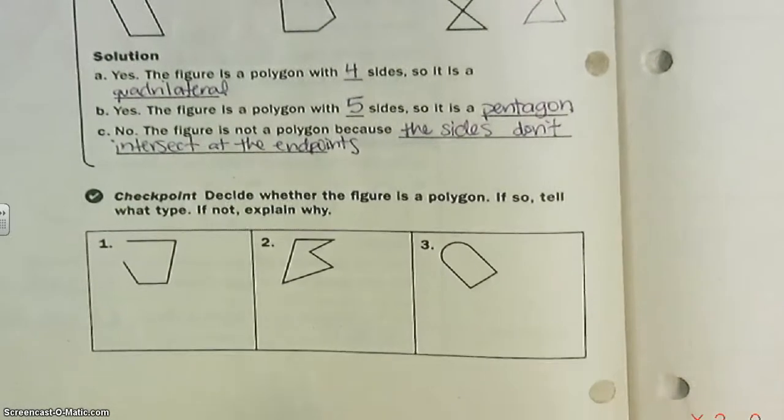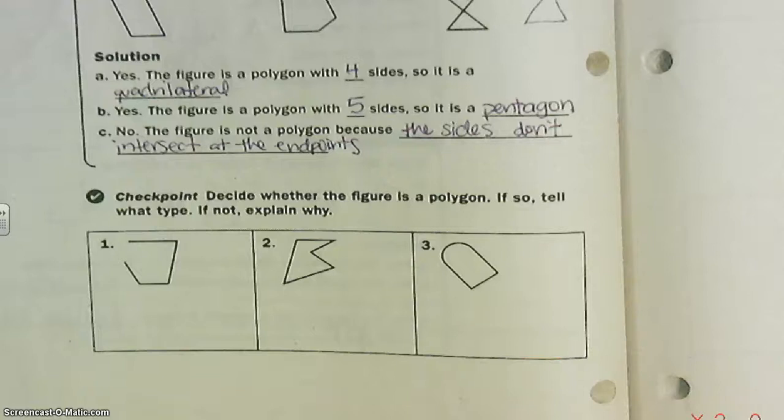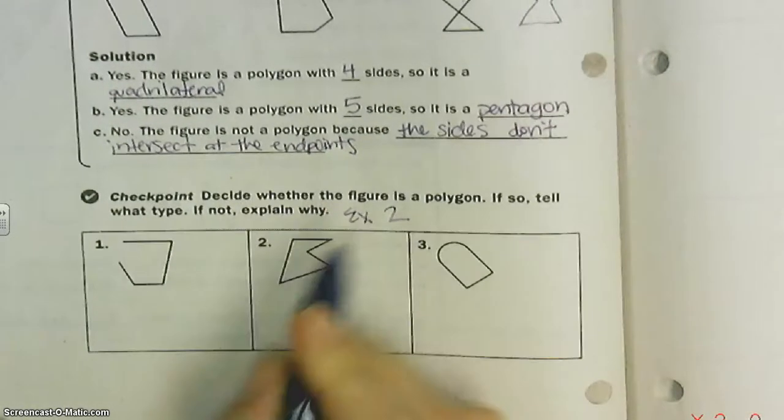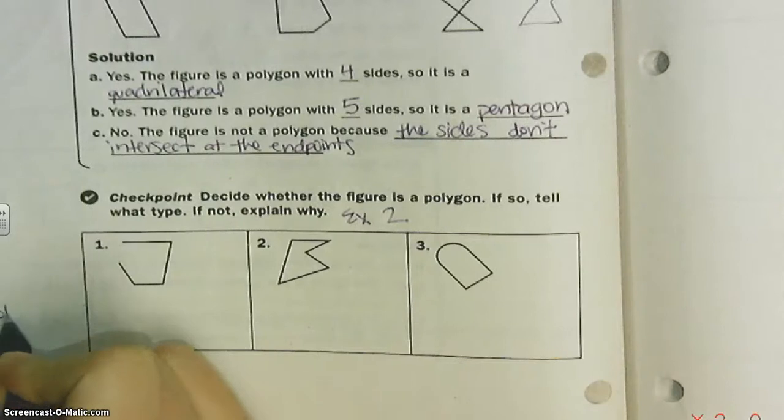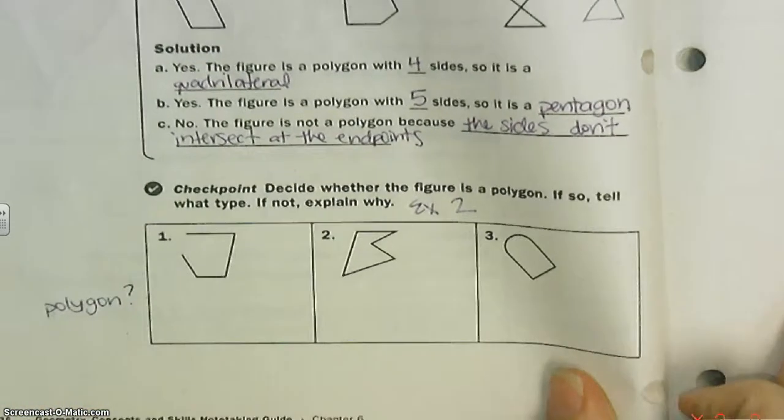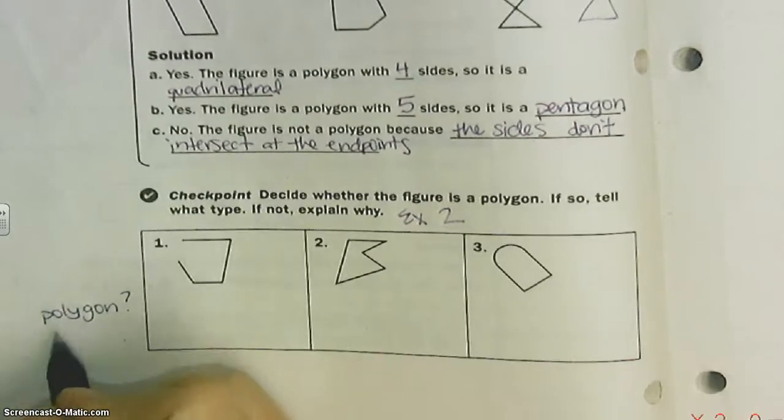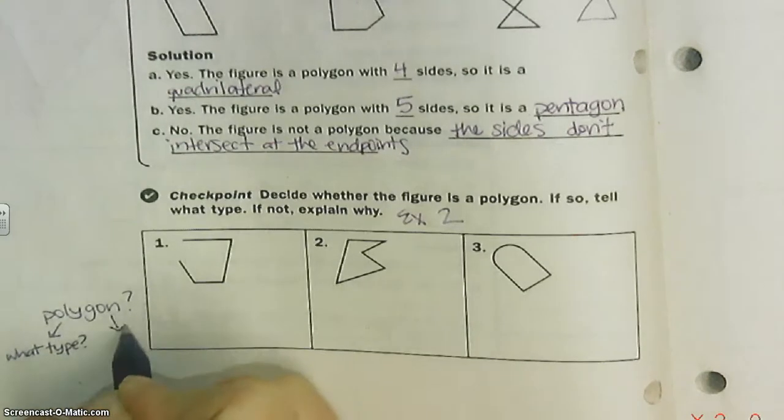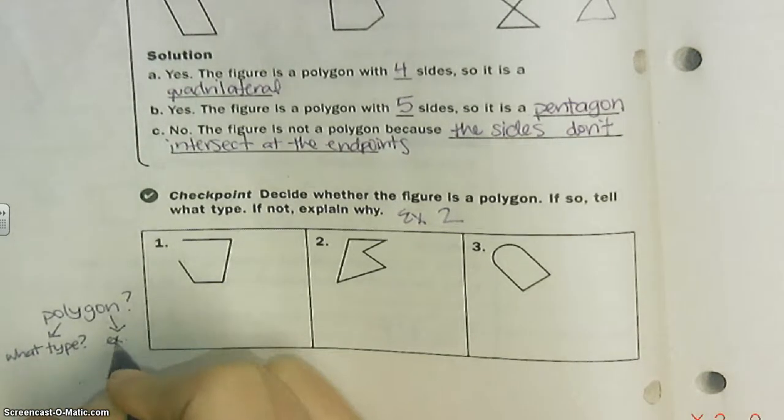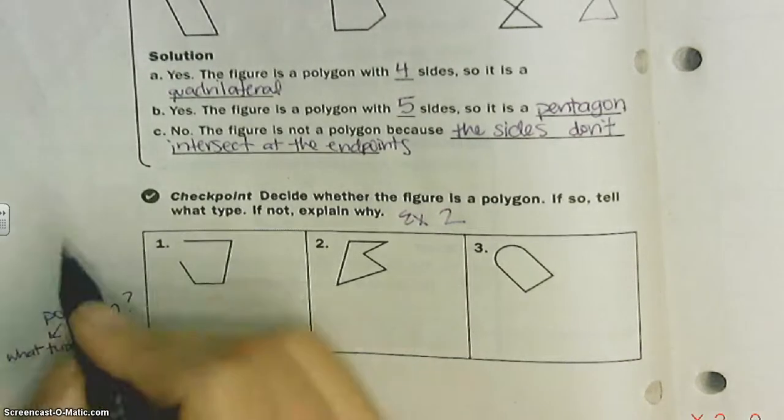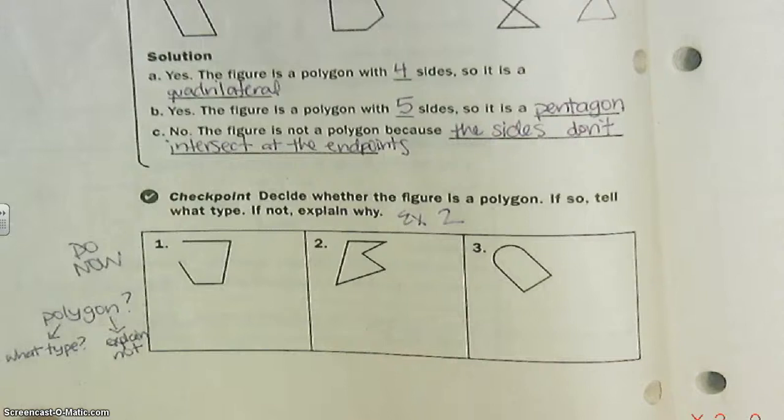Decide whether the figure is a polygon. If so, tell what type. If not, explain why. So this is just like example two that we just did. The first thing you're going to answer: is it a polygon? That's yes or no. If yes, tell what type—using the words from above. If not, explain. That's what you're doing here. So go ahead and do this now.